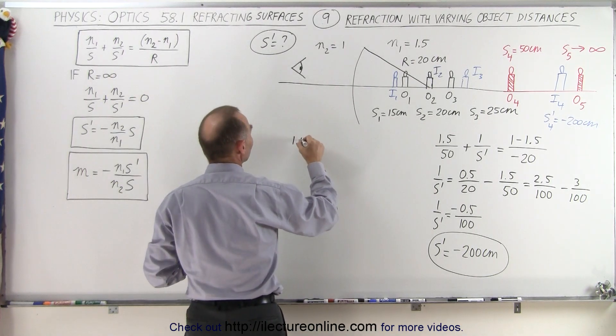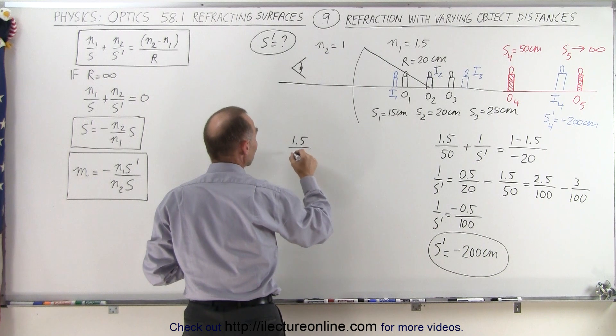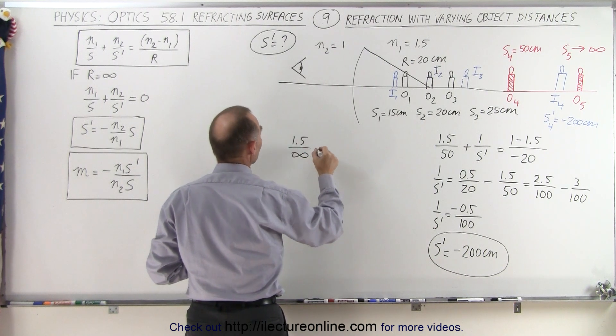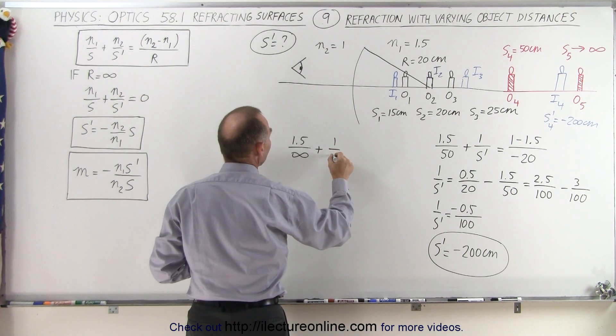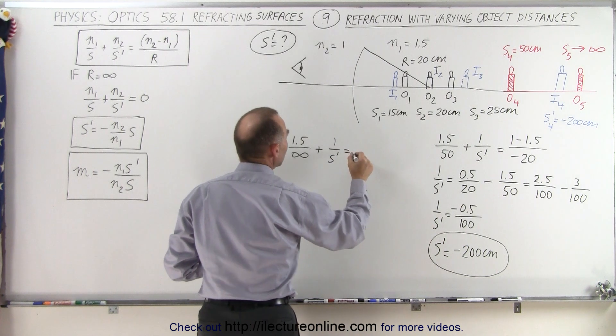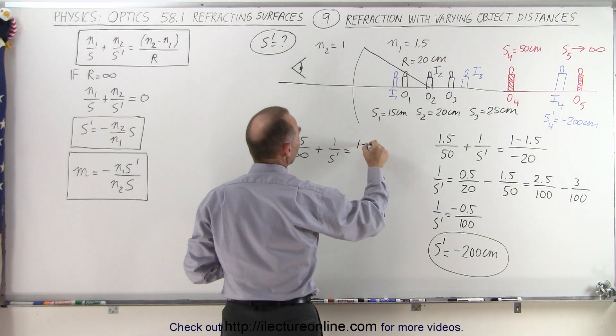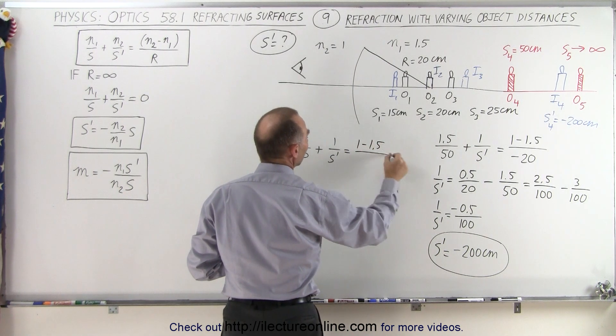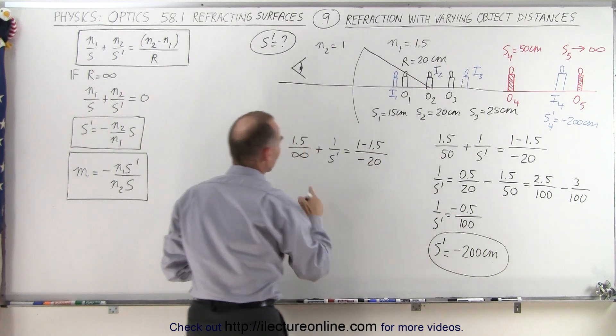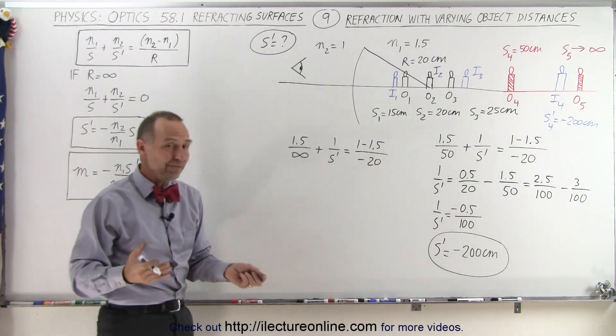So we have N1, 1.5, divided by s, which now becomes infinity, plus 1 over s prime. That's going to be equal to N2, which is 1, minus N1, 1.5, divided by a minus 20. Of course, anything divided by infinity becomes 0, so this term disappears.